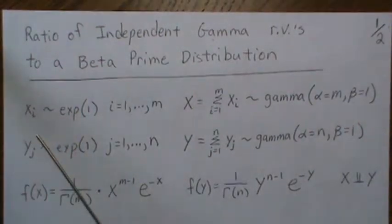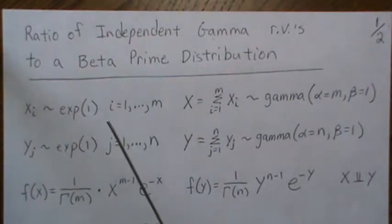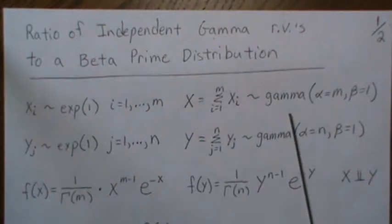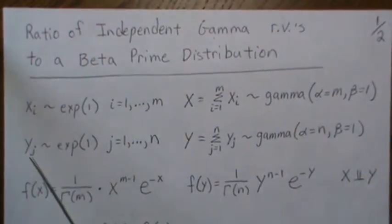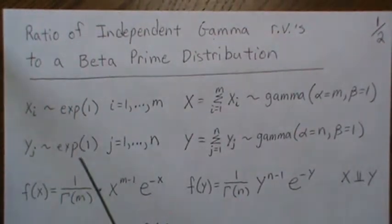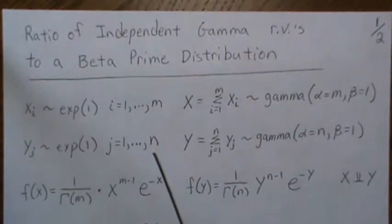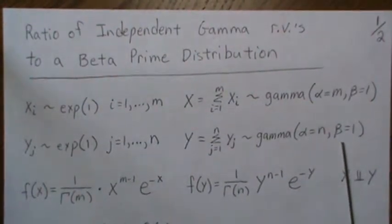So here, if we let xi be exponential 1 random variables, say m of them, and we sum them up, then we get a gamma of alpha equal to m and beta 1. And the same way with the y's. So if we let the y's be exponential 1 random variables, and there's n of them, we sum them up, we get a gamma of alpha equal to n and beta equal to 1.